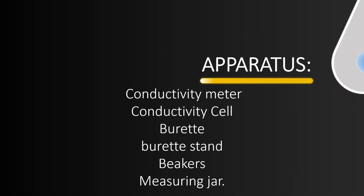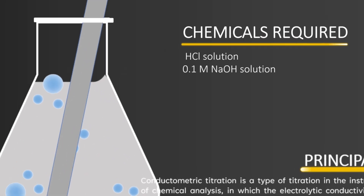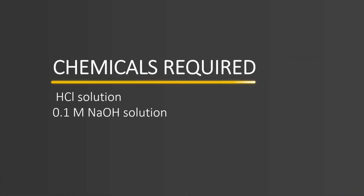Apparatus: Conductivity Meter, Conductivity Cell, Buret, Buret Stand, Beakers, and Measuring Jar. Chemicals Required: HCl Solution, 0.1 M NaOH solution.